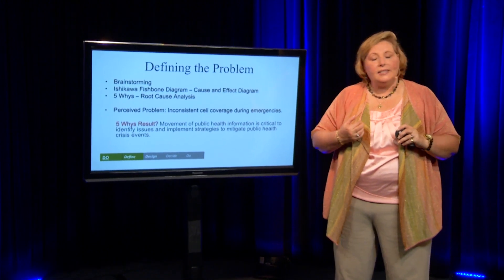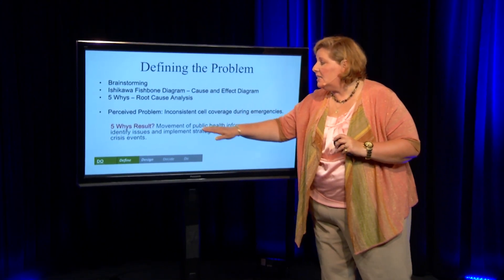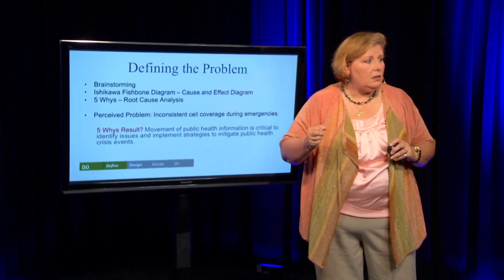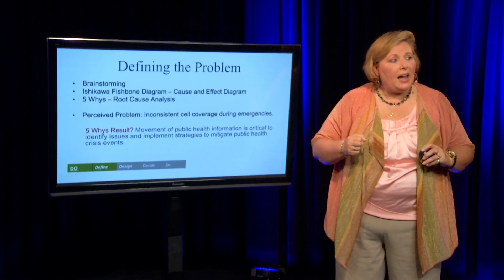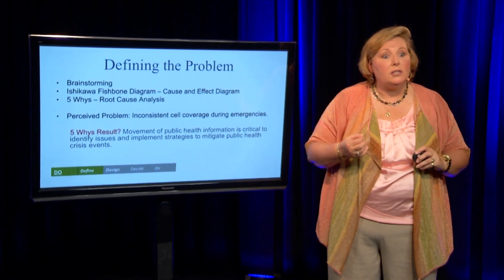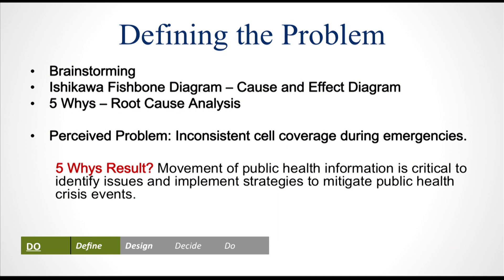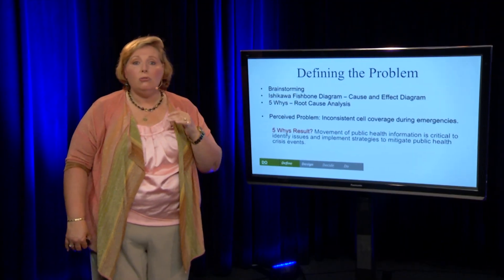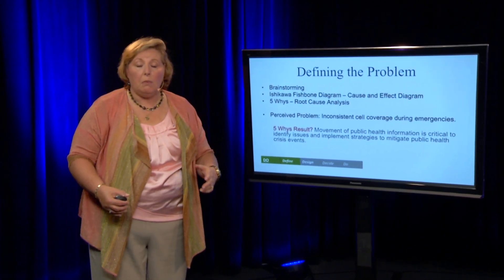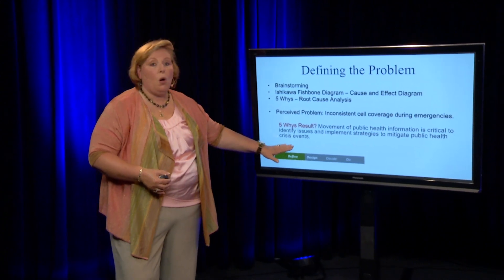The group has decided that the perceived problem is inconsistent cell coverage during emergencies. But what's important is drilling it down tighter — is this the real problem, or is it truly just a perceived problem? So you start doing the five whys. They're so simple; they don't require anything other than a piece of paper and a pen. You ask: why is inconsistent coverage during emergencies a problem? We have to respond to disasters. Why is that a problem? Because it's our department's mission as preparedness people to respond, and public health depends on us. You continue to drill it down.